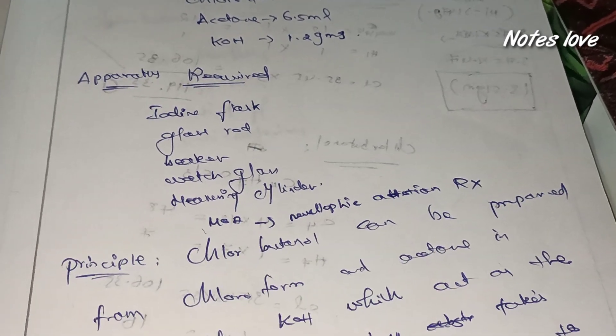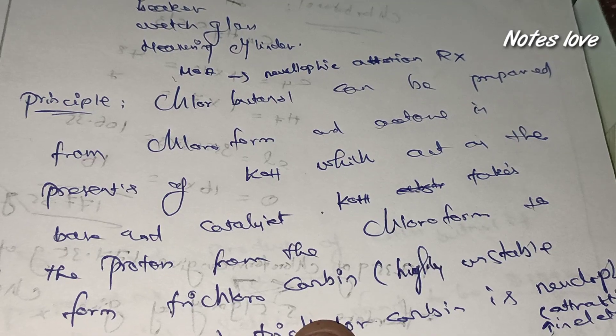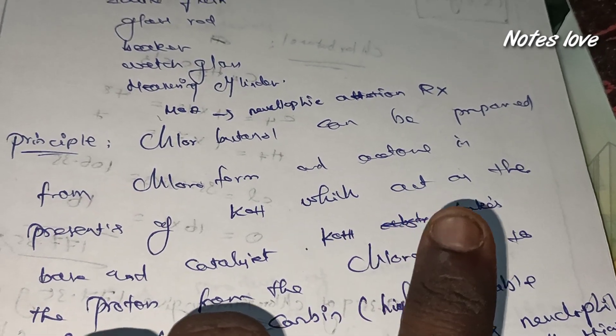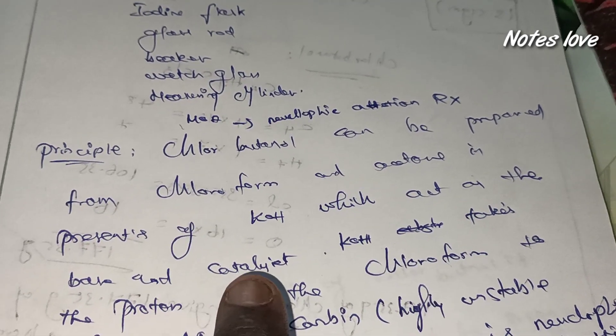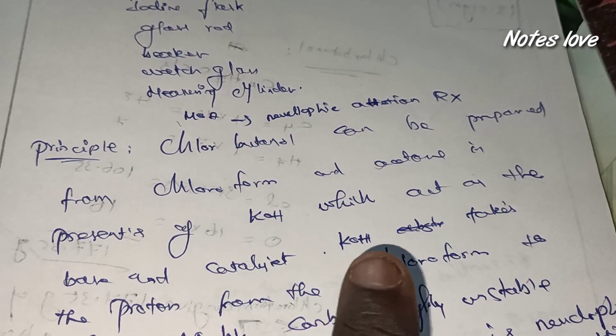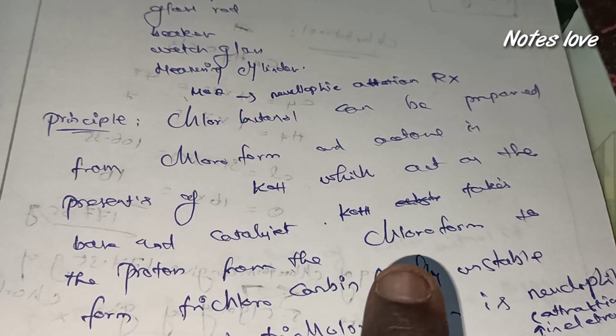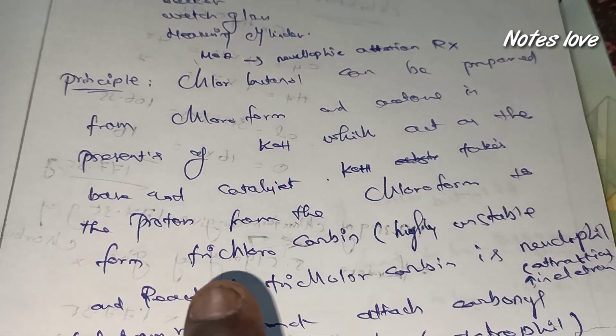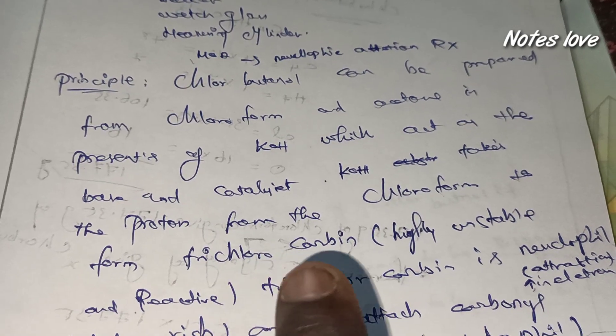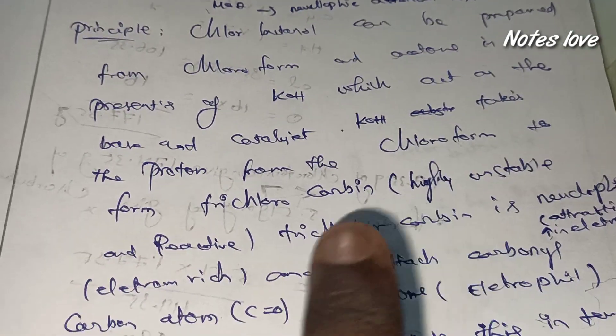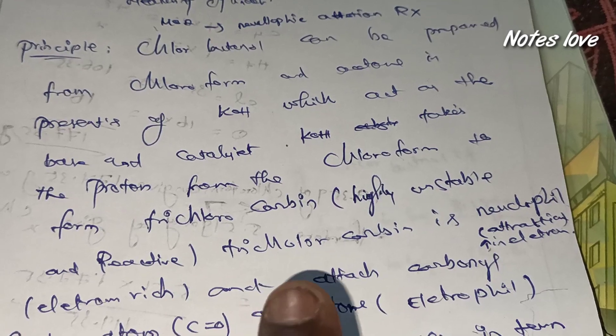Which acts as a base and catalyst, potassium hydroxide takes a proton from a chloroform to form trichlorocarbene. It's highly unstable and reactive. The trichlorocarbene is a nucleophile, nucleophilic means attraction and electron rich.